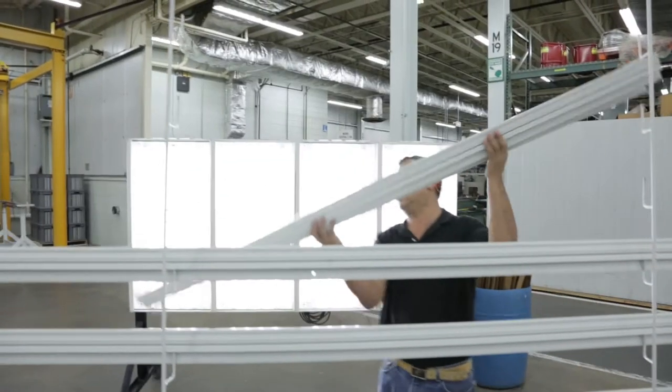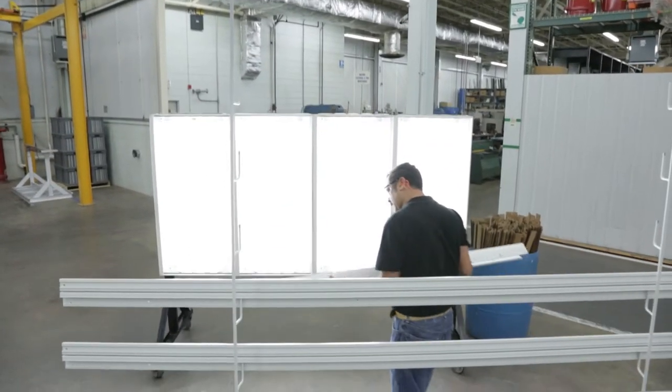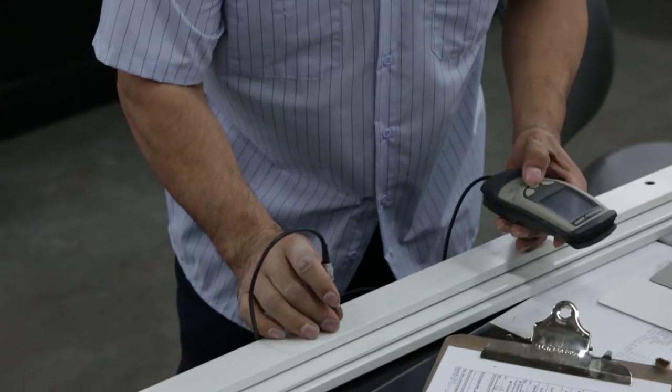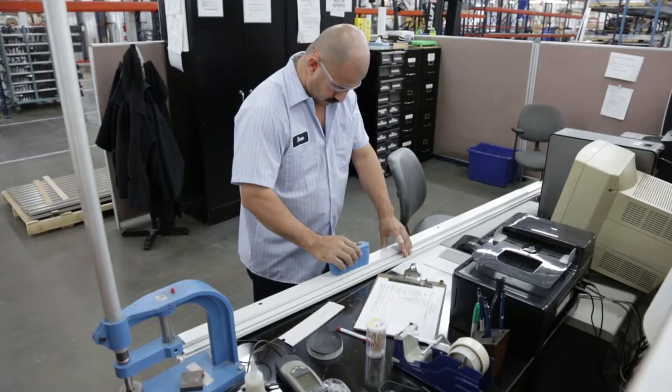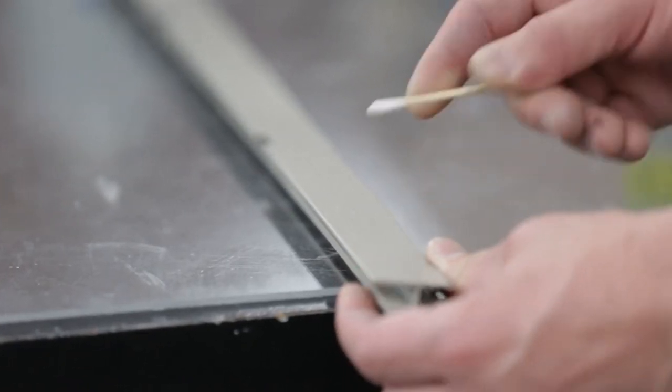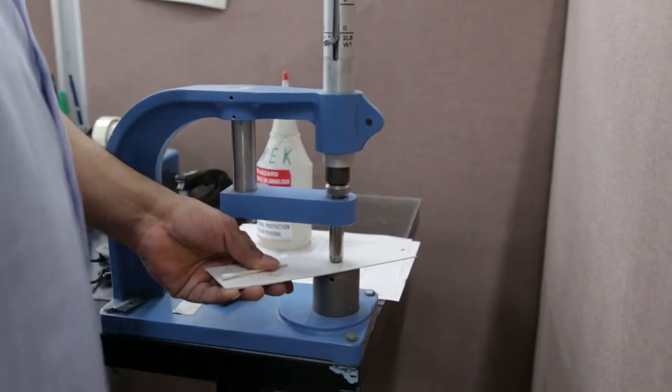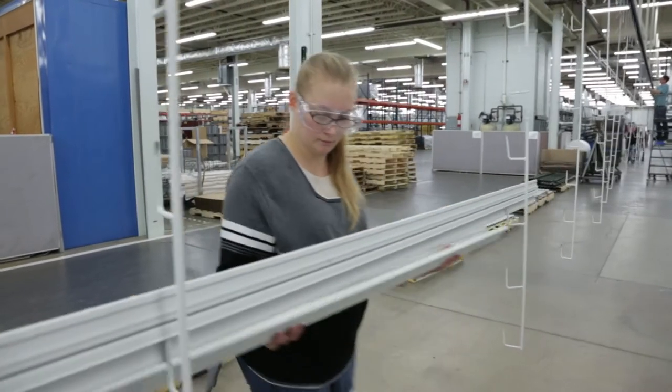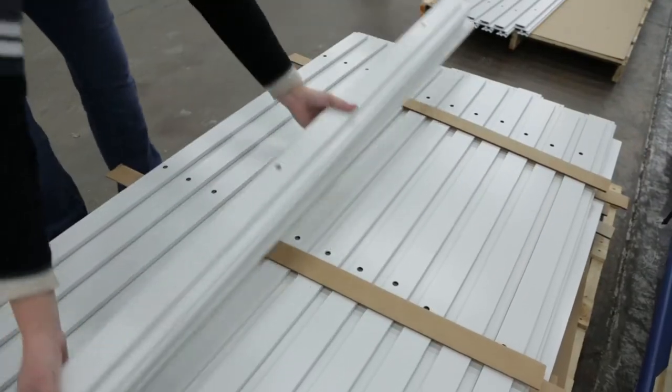Our inspection process doesn't stop at a visual inspection. We also perform color inspection using a spherical color meter, mill thickness, gloss, pencil hardness, cross hatch adhesion, and MEK resistance testing. This inspection process ensures that the products coming off the line meet our customers' high expectations.